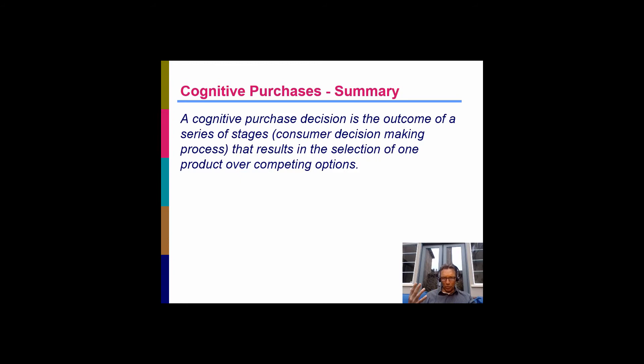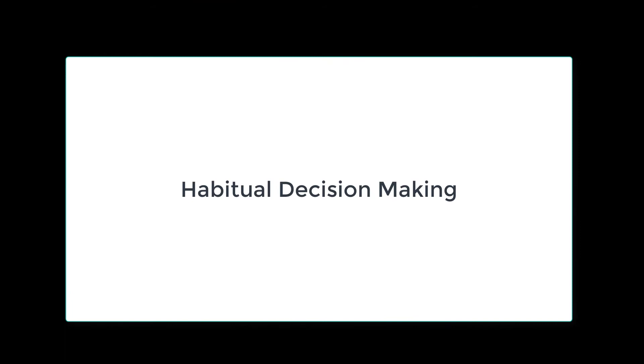To sum up the cognitive purchasing process: these decisions are the outcome of a series of stages — problem recognition, information search, evaluation of alternatives, purchase, and post-purchase evaluation — resulting in the selection of one product over competing options. We as marketers can influence each of those different stages of the cognitive process.